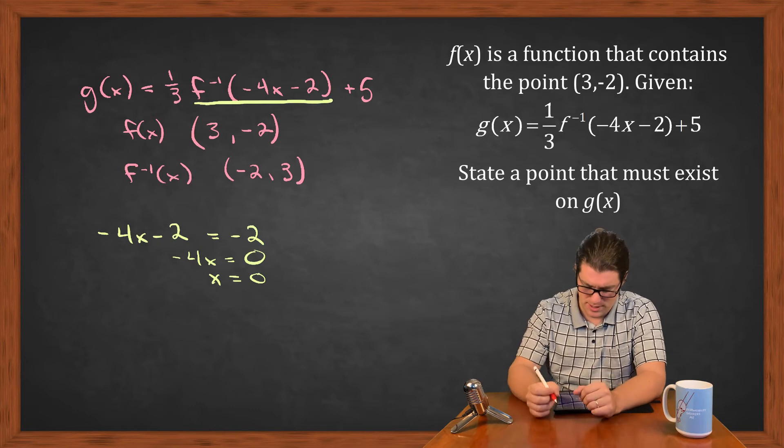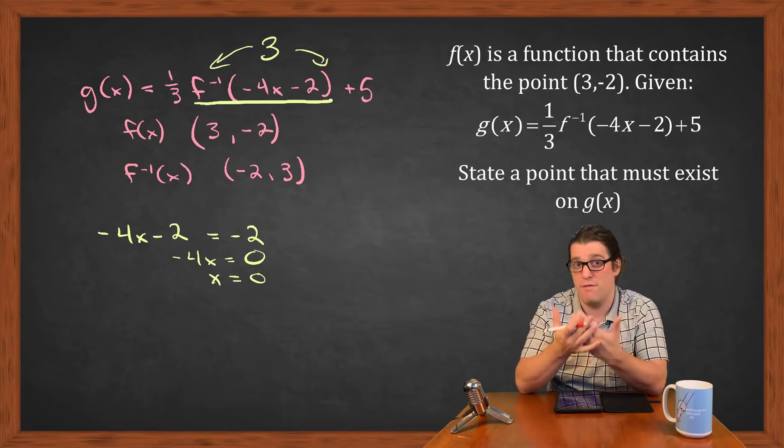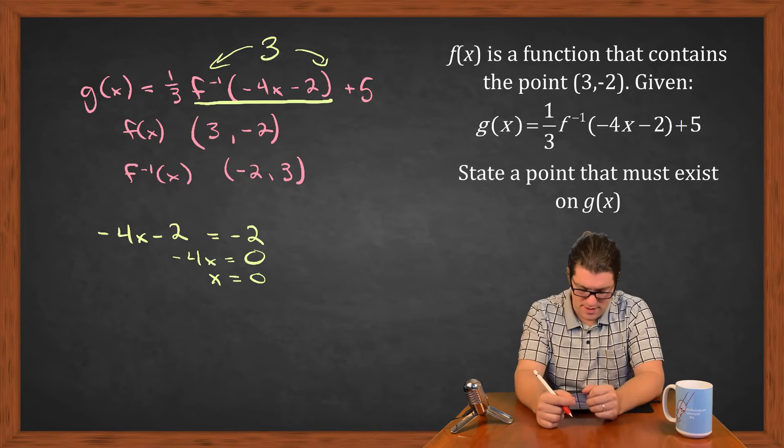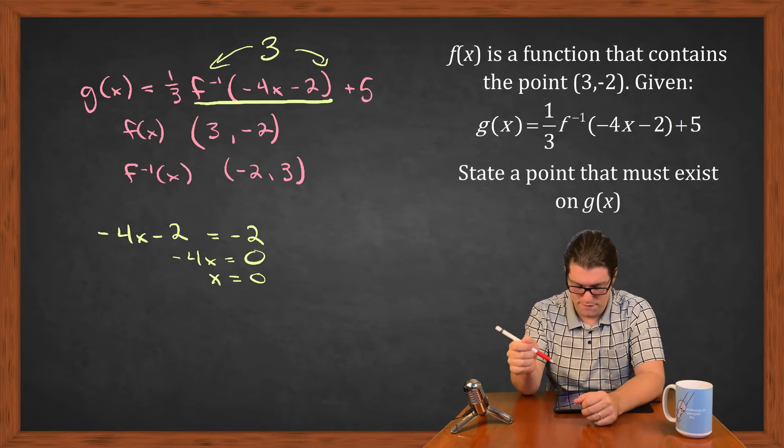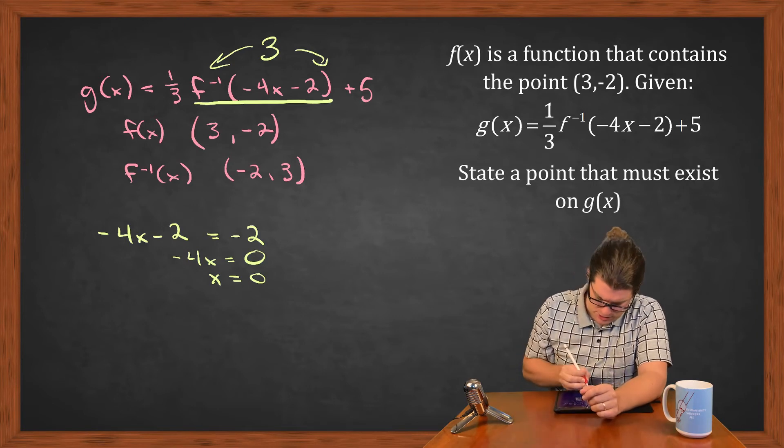And if the inner argument is -2 for f inverse, f inverse of -2 gives us 3. So this whole underlying part that I have up at the very top, this whole thing has a value of 3. So if that thing kicks out a value of 3, then that means that 1/3 of 3 is going to be 1, plus 5 is going to give us 6.